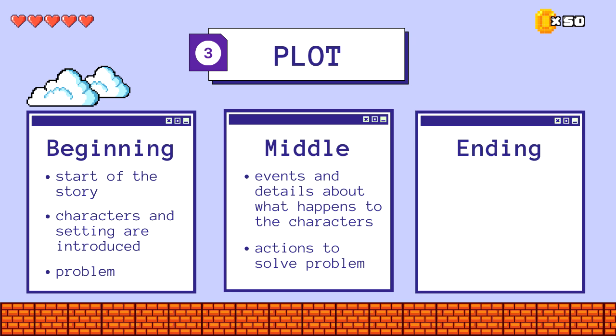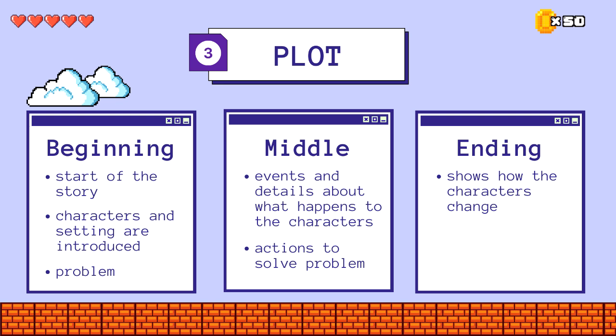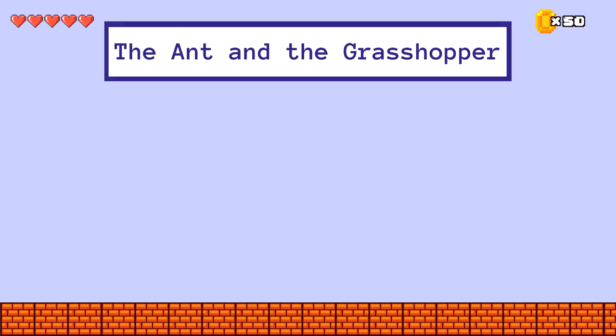The ending shows how the characters change or are different than they were at the beginning of the story. This part also gives the solution to the problem. Now, we will read the story and try to identify its elements.